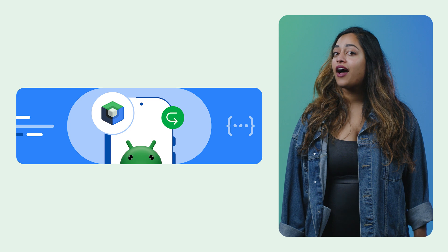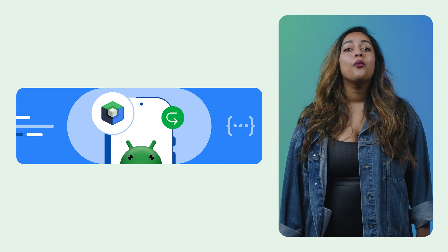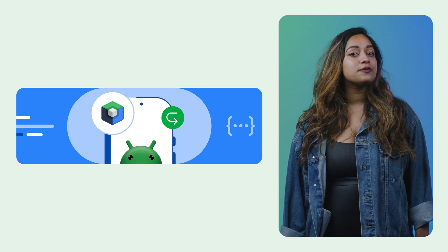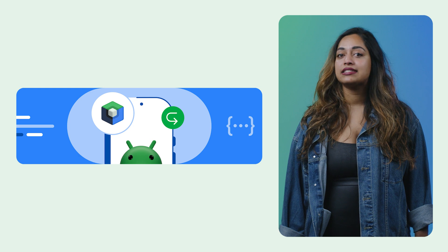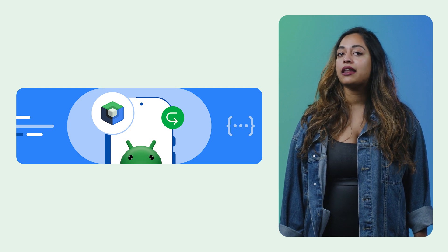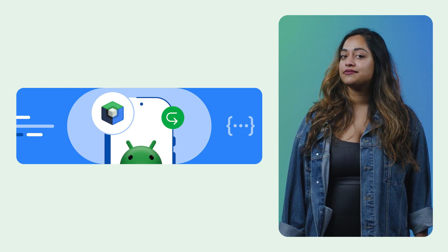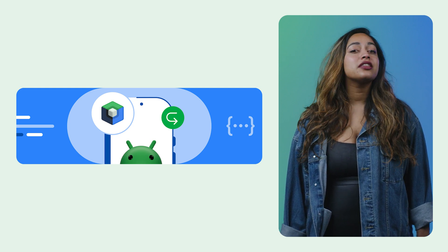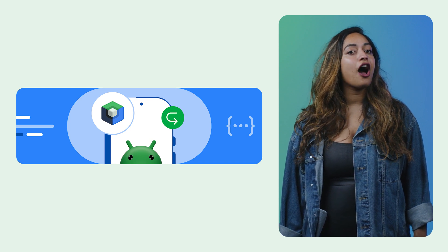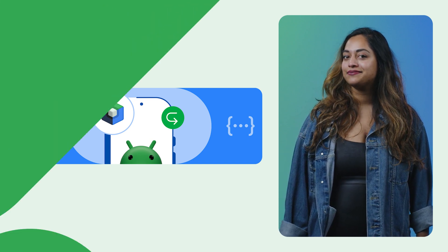Another fun addition is autosize. When placing text inside a container, you can now use the autosize parameter in BasicText to let the text size automatically adapt to the container size. Check out the post to learn more about autofill, autosize, and all the other goodies in Compose 1.8.